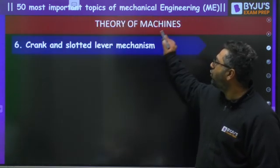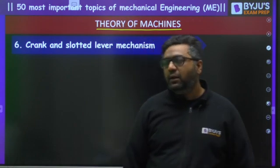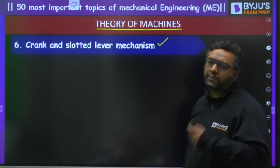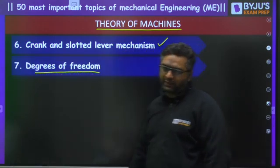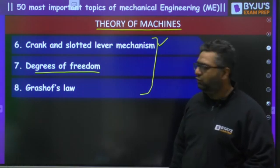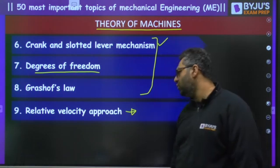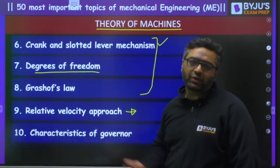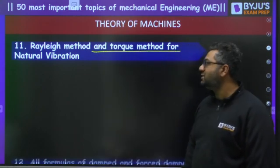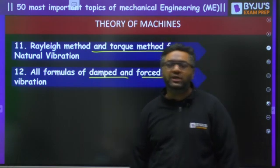Moving to Theory of Machines: the crank and slotted lever mechanism is the best mechanism for shaper and planer. Next is degrees of freedom, which is also very important, and then Grashof's law. Out of these three topics, one question will surely come. Then we have the relative velocity approach with mechanics-related questions. Characteristics of governors — isochronism, sensitivity, stability — then Rayleigh's method and torque method for natural vibrations. Finally, all formulas of damped and forced vibrations — there are hardly eight to nine formulas.